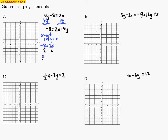I'll write that down and also write the answer as an ordered pair. These are x-intercepts, so it's negative 4 comma 0. When y is zero, I got negative 4 for x. If I plot that, I go over 4 spaces on the x-axis — I didn't go up or down because I set y equal to zero.